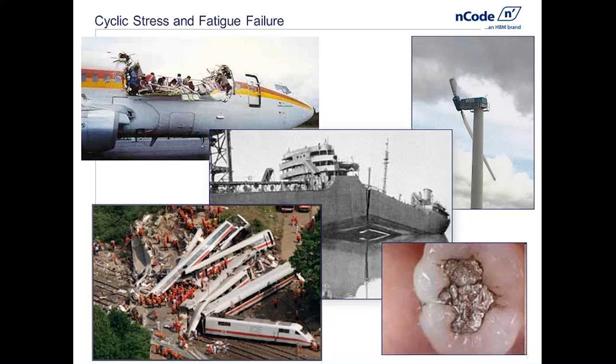We've got five different pictures of some catastrophic fatigue failures on this screen. In the upper left is an aircraft from the late 80s that went into convertible mode while flying between islands in Hawaii — this was because of the pressurization-depressurization cycles of flying at altitude versus landing in thicker air at sea level. In the upper right corner is a wind power generation turbine that sees cyclic stresses because of wind load and inertial loading.